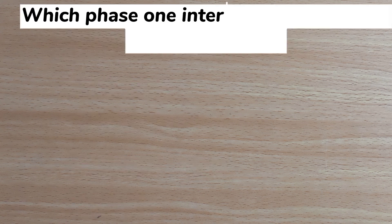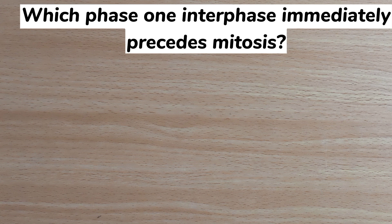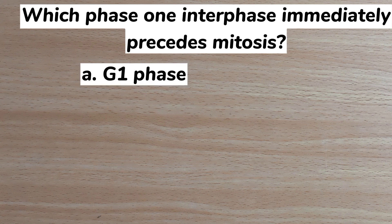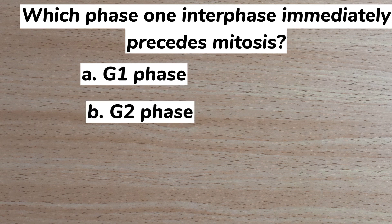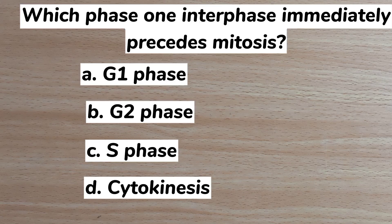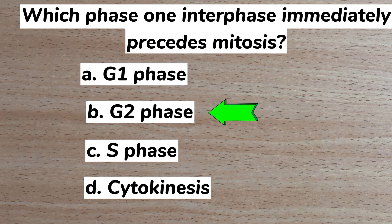Number fourteen: which phase of interphase immediately precedes mitosis? A. G1 phase, B. G2 phase, C. S phase, D. Cytokinesis. Answer: B. G2 phase.